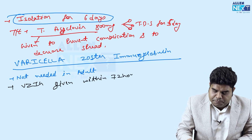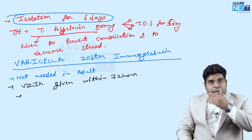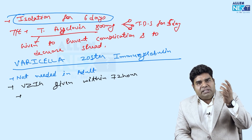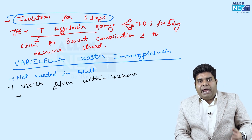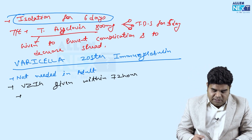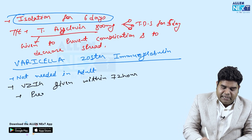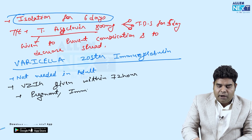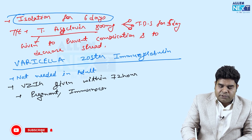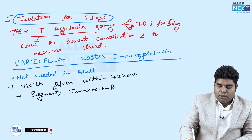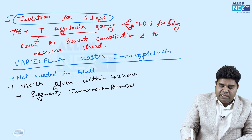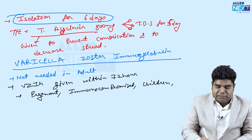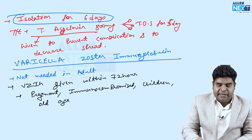To whom will you give varicella zoster immunoglobulin? Suppose in a household there is a pregnant female, a child, an elderly person, and an adult — to whom will you give it first? First, we give it to the pregnant woman. Then to all immunocompromised individuals. Then it can be given to children and elderly people, but it is not needed in healthy adults.